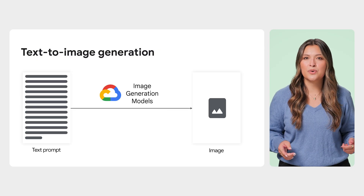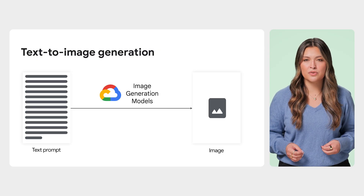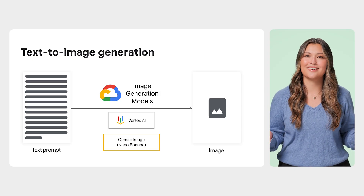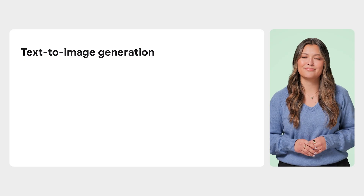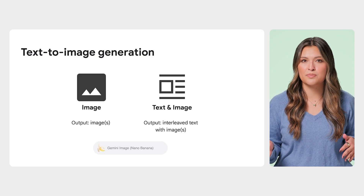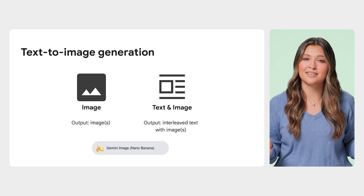When building on Google Cloud, our most capable model for image generation and editing is Gemini Image, also known as Nano Banana. Nano Banana is a highly flexible, natively multimodal model that leverages the same world knowledge as Gemini, giving it incredible contextual understanding and consistency for complex edits. If you're starting with a text prompt, there are two primary ways you can use this model: generating a standalone image, or generating a combined interleaved response of both text and images.